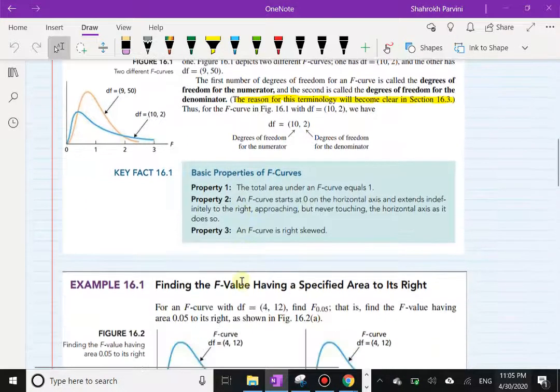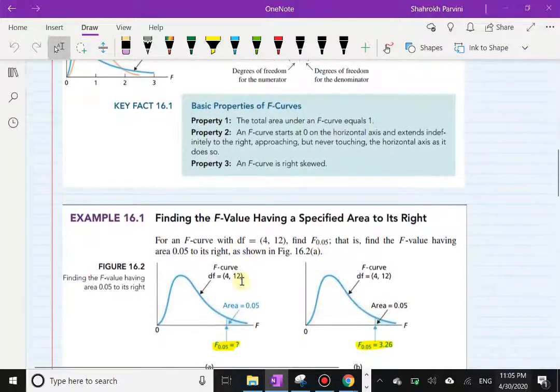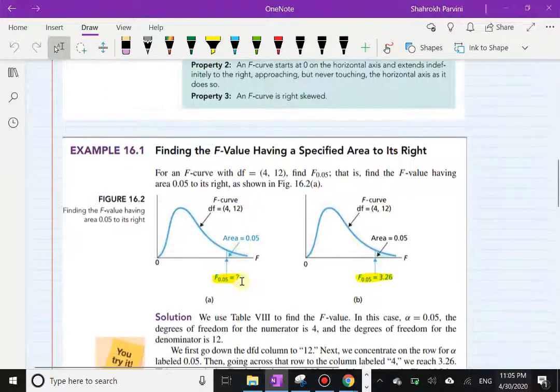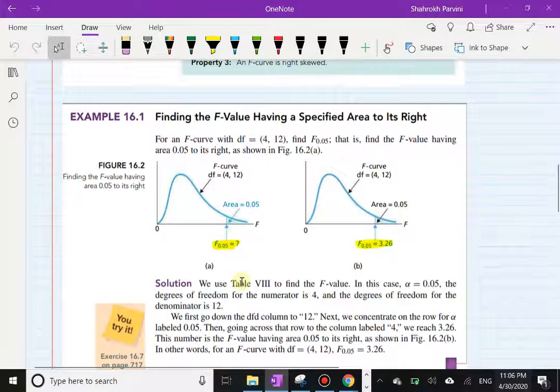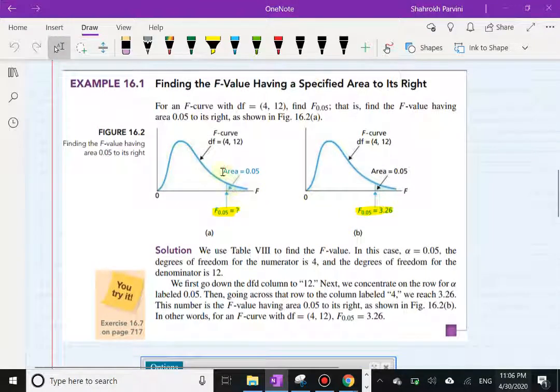Now let's see how we're going to actually find area under this curve. All we are interested with the F distribution is finding the area to the right. That's all we want to do here. We're not going to do anything else with this probability distribution.